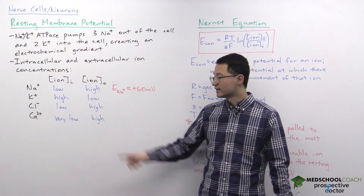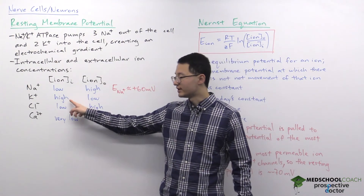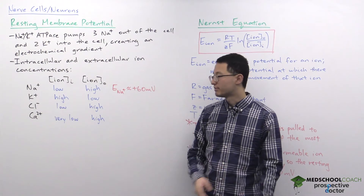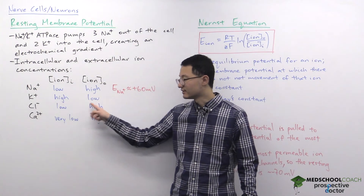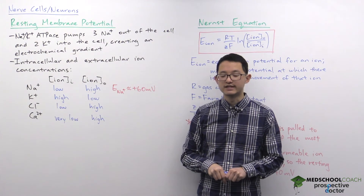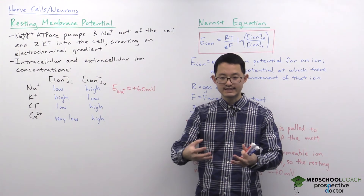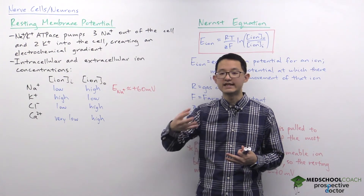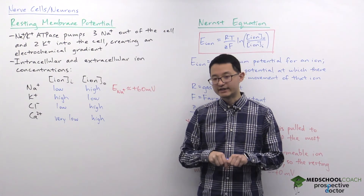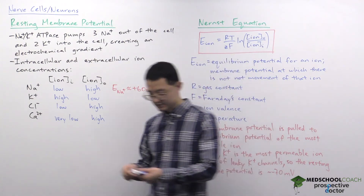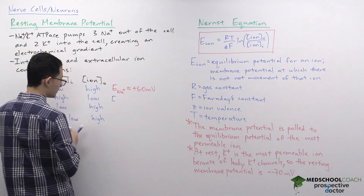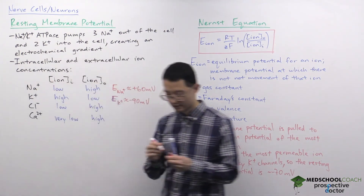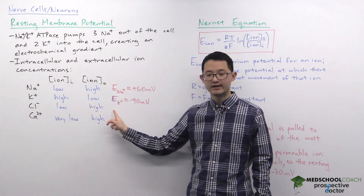For potassium: it has a high concentration inside and low outside, so it naturally wants to leave the cell. To prevent potassium from leaving, we need the cell to be negative, since potassium cations being positive would be reluctant to leave a negative environment. Therefore the equilibrium potential of potassium is approximately negative 90 millivolts.